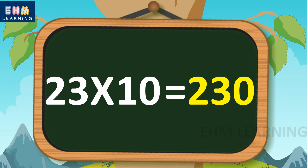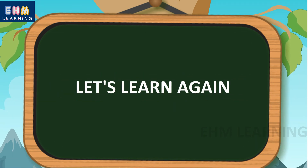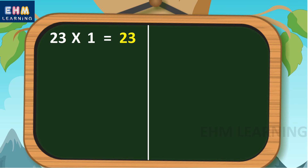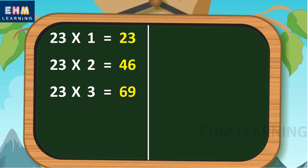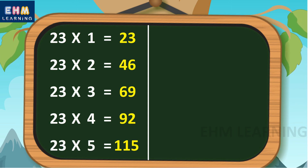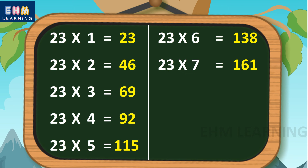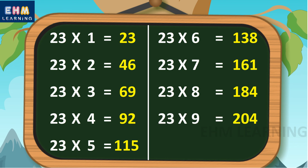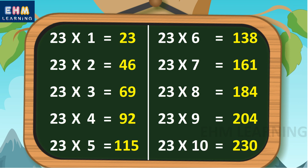23 10s are 230. Let's learn again. 23 1s are 23, 23 2s are 46, 23 3s are 69, 23 4s are 92, 23 5s are 115, 23 6s are 138, 23 7s are 161, 23 8s are 184, 23 9s are 207, 23 10s are 230.